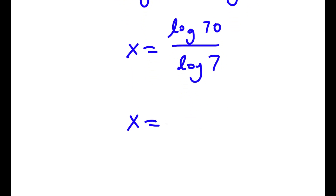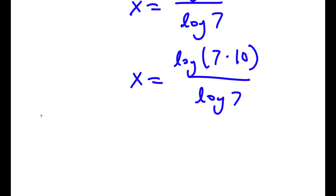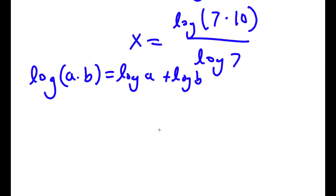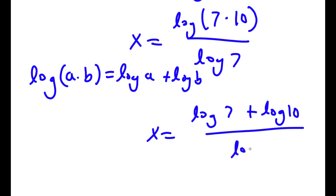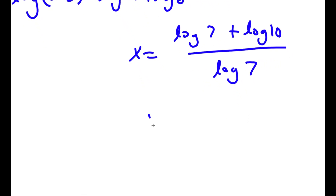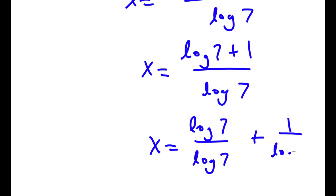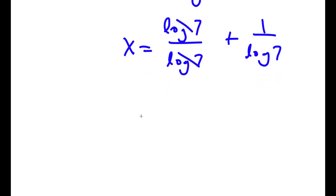Now log 70 we can rewrite as log of 7 times 10, over log 7. If I have something in the form log(a times b), this is the same thing as log(a) plus log(b). So log of 7 times 10 equals log 7 plus log 10, all over log 7. Now the value of log 10 is simply equal to 1. So now I have log 7 plus 1 over log 7. This can be written as log 7 over log 7 plus 1 over log 7. Log 7 over log 7 cancels out, so I'm left with x is equal to 1 plus 1 over log 7.